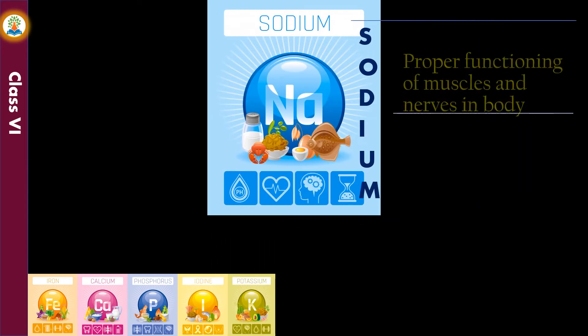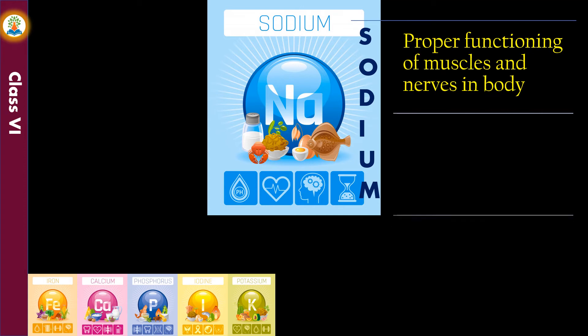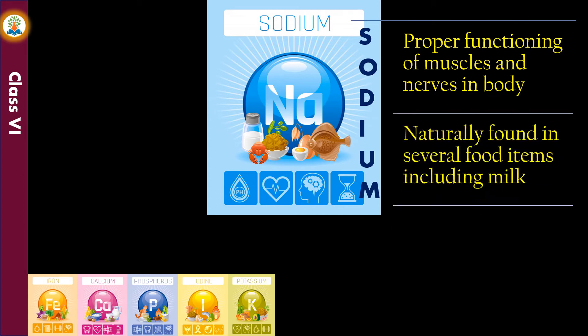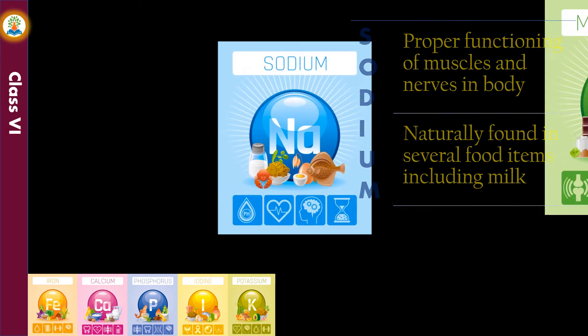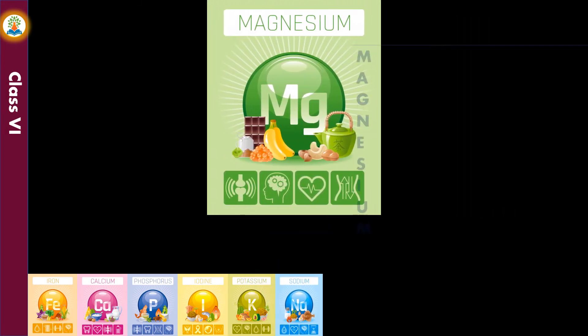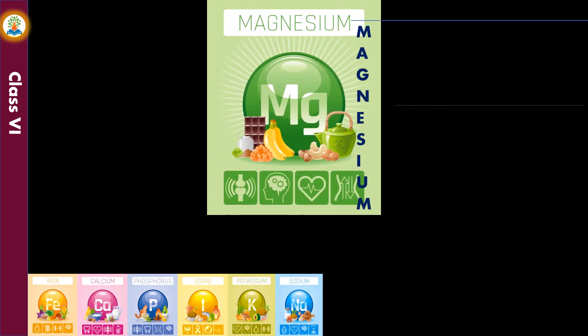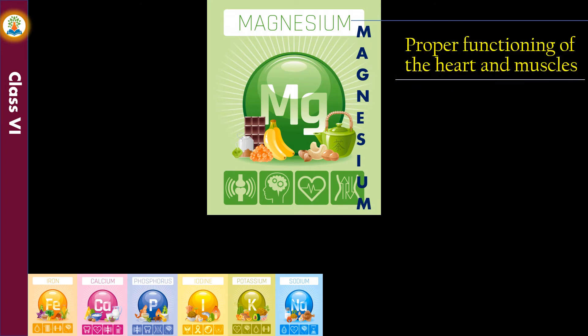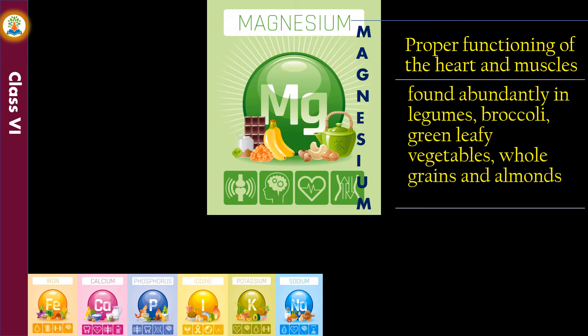Sodium is essential for proper functioning of muscles and nerves in the body; it is naturally found in several food items including milk. Magnesium is important for proper functioning of the heart and muscles; it is found abundantly in legumes, broccoli, green leafy vegetables, whole grains, and almonds.